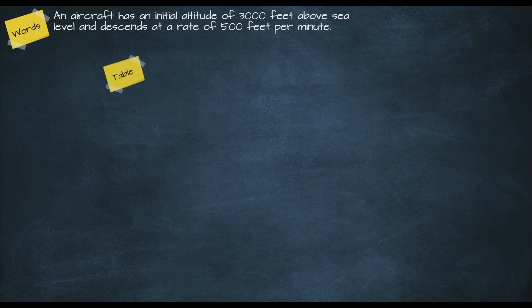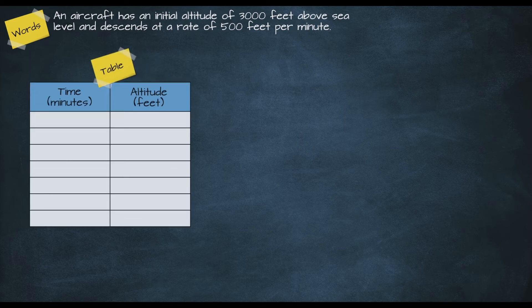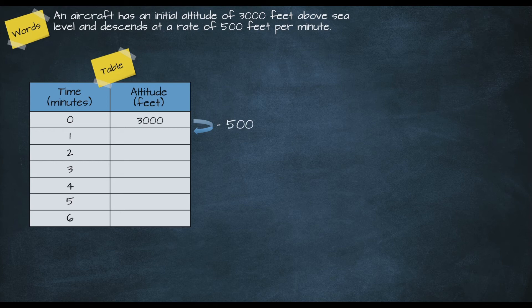For our table of values, we can still use one-minute increments in the time column. Our initial altitude is 3000 feet, and for each additional minute the altitude decreases by 500 feet, so we subtract 500 to move from one row to the next. We can continue this pattern to complete the table.